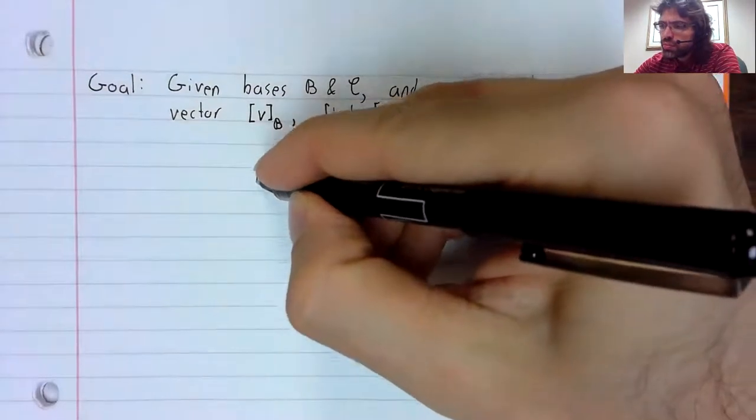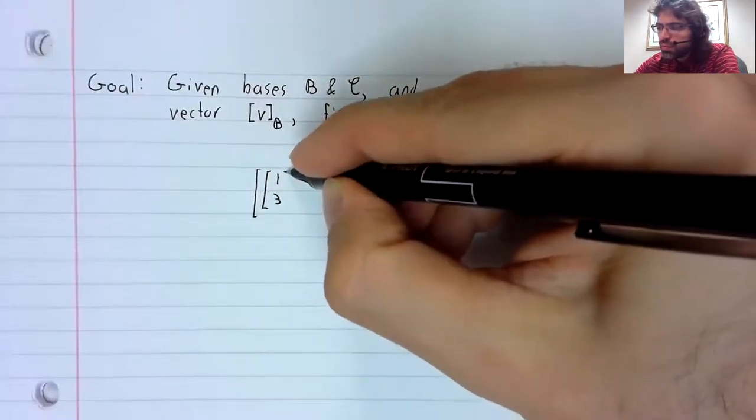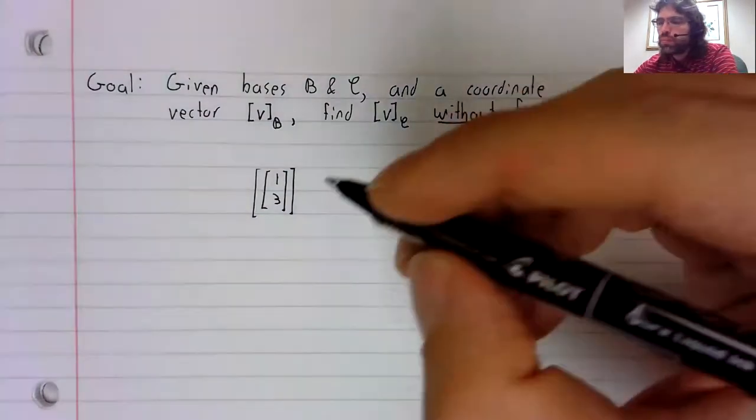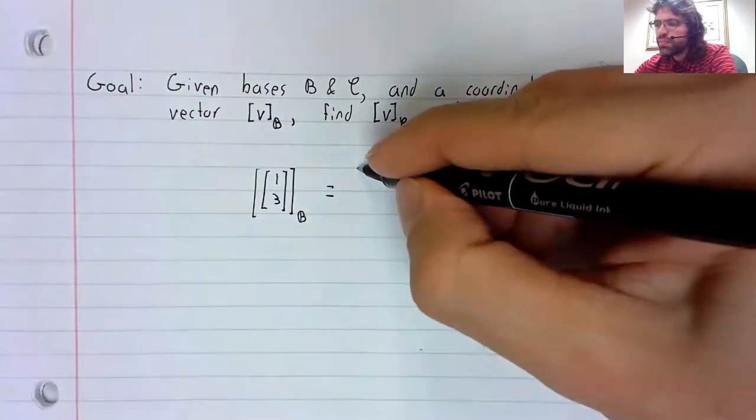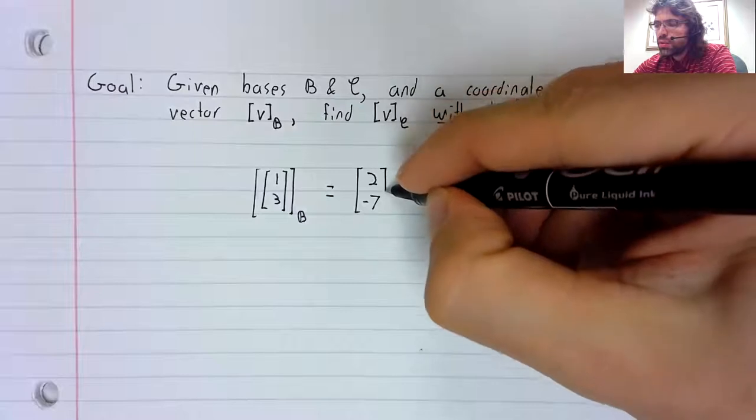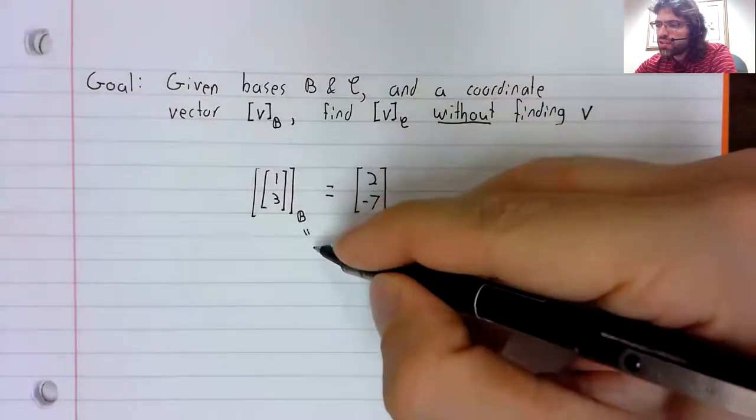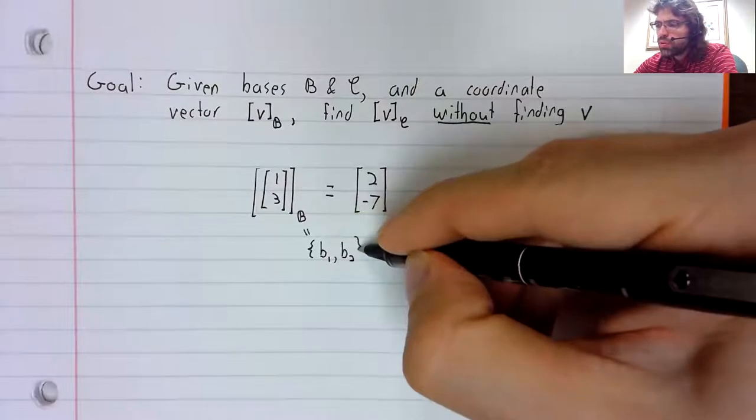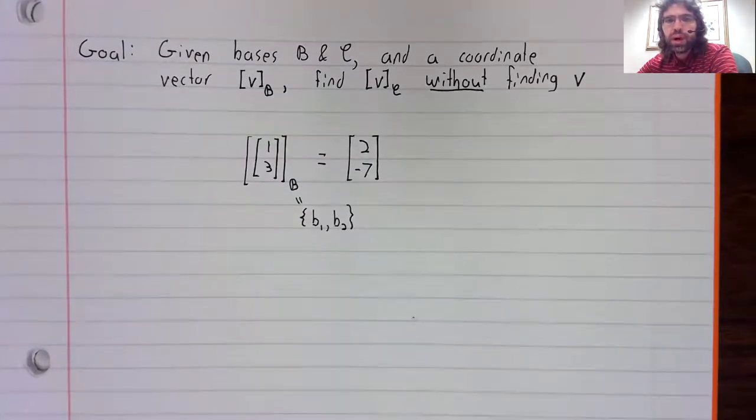Suppose you're given that the coordinate vector of [1, 3] with respect to some basis B is [2, -7]. R2 is a two-dimensional space, so this basis must contain two vectors, B1 and B2.